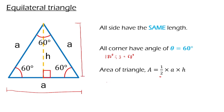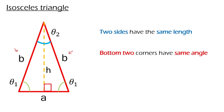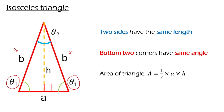Let's move on to the next triangle, which is the isosceles triangle. For an isosceles triangle, two sides have the same length — for example, sides b and b here. Both sides have the same length. Besides this, the bottom corners will also have the same angle. For the area, they share the same formula as the previous one.